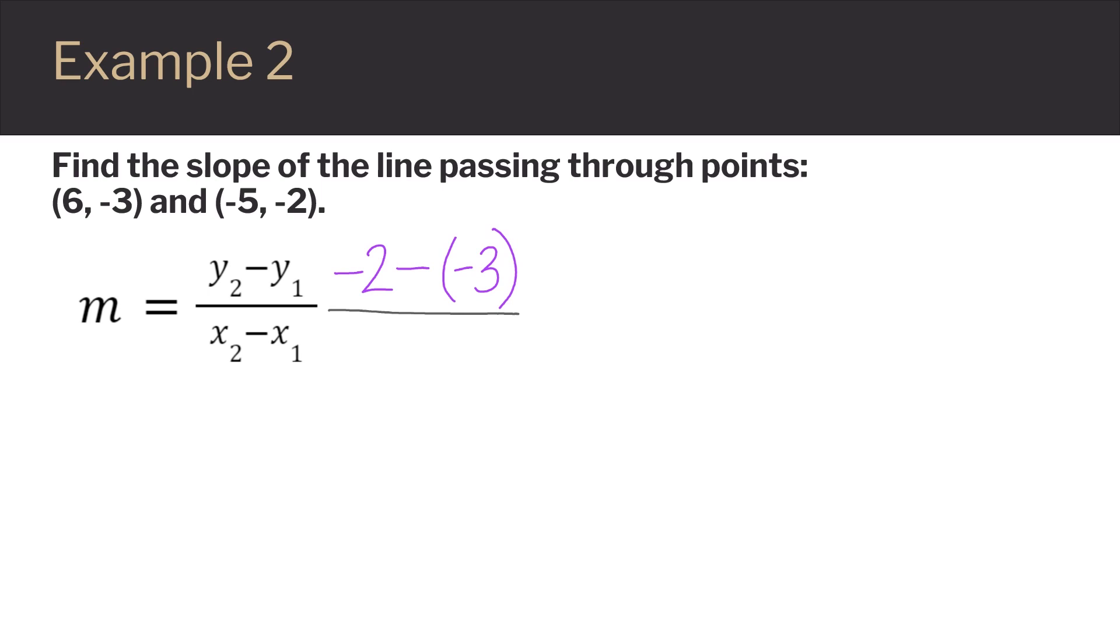Then on the denominator, we would have our x-values. Since I started with negative 2, I have to then start with negative 5 in the denominator and subtract the other x-value, which in this case is 6.